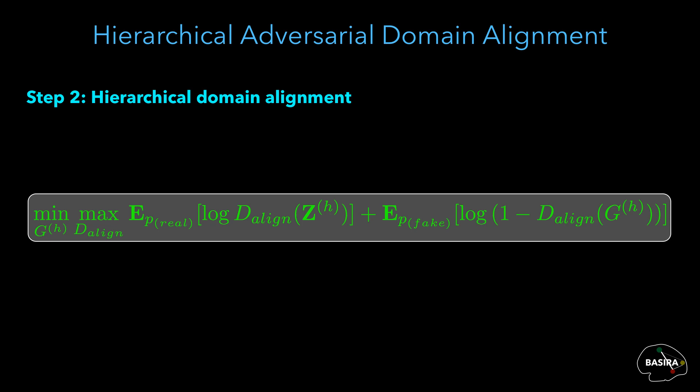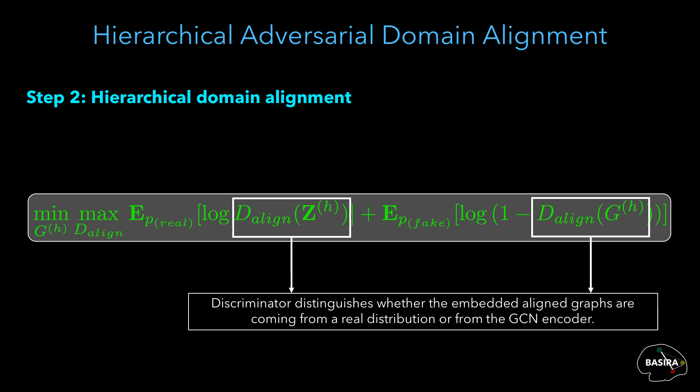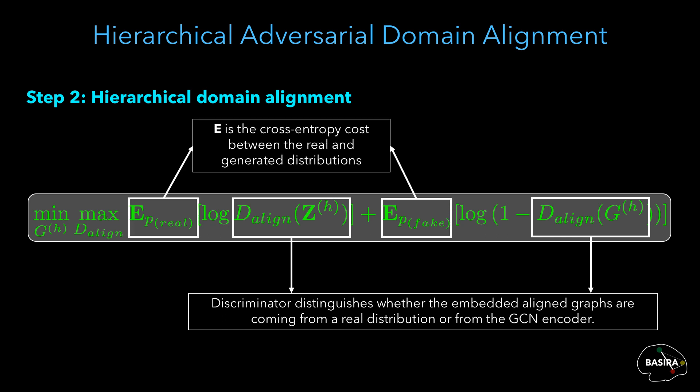Since each domain alignment level is a GAN-based method, we formulate the cost function at level H as a min-max loss function. The generator tries to minimize this function while the discriminator tries to maximize it. The DL discriminator acts as a classifier which distinguishes whether the embedded aligned graphs come from a real distribution or from the GCN encoder, and E represents the cross-entropy cost between the real and generated distributions.